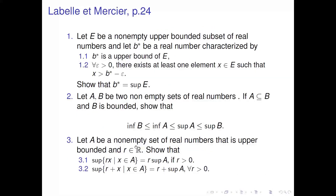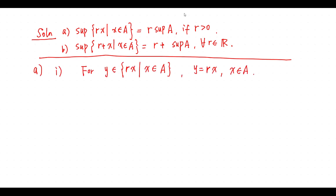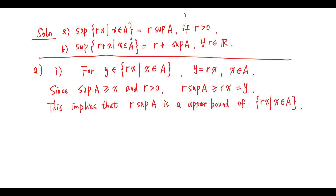Let A be a non-empty set of real numbers that is upper-bounded, and let R be a real number greater than 0. Show the two identities. Solution: for Y in the set {R·x : x ∈ A}, Y equals R times x for some x in A. Since supremum A is greater than or equal to x and R is greater than 0, R times supremum A is greater than or equal to Y. This implies R times supremum A is an upper bound of this set, so R times supremum A is greater than or equal to supremum of this set.